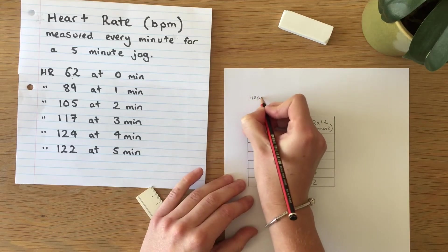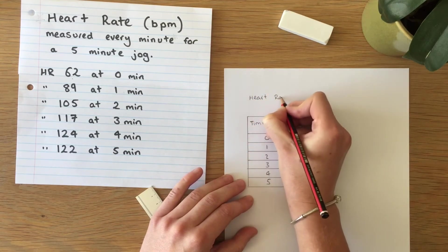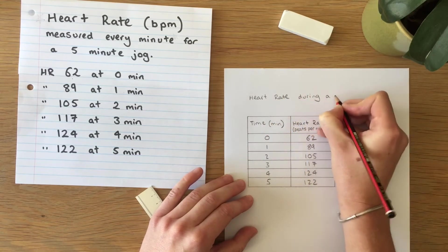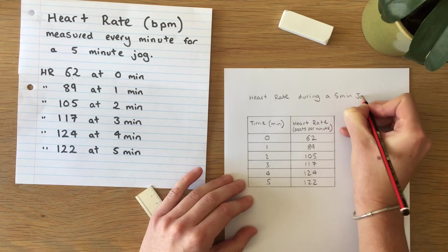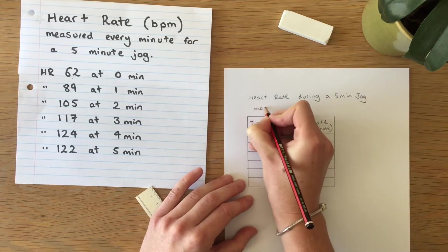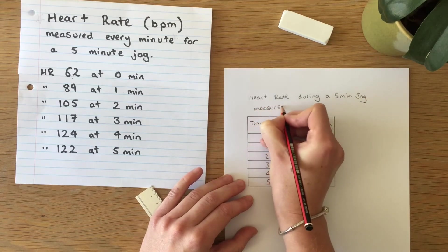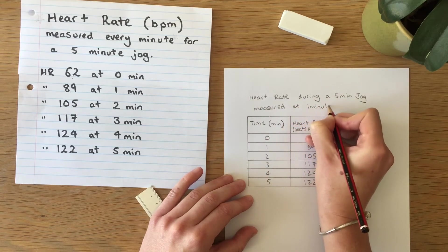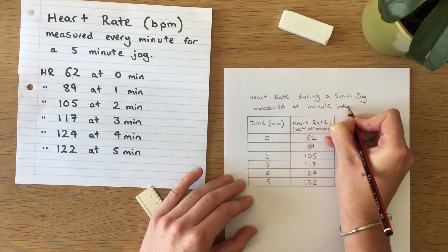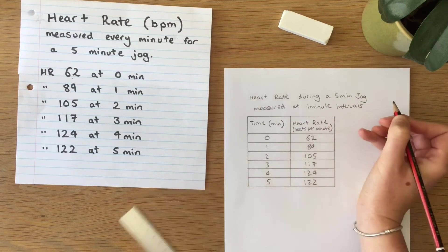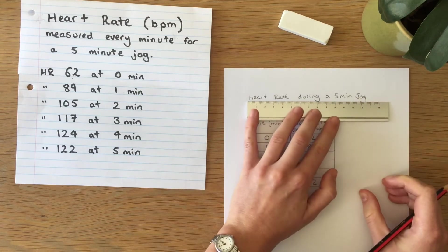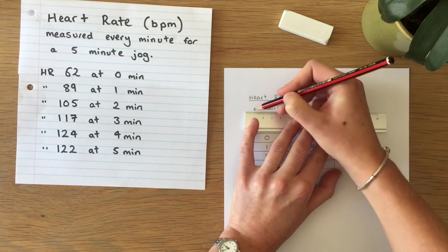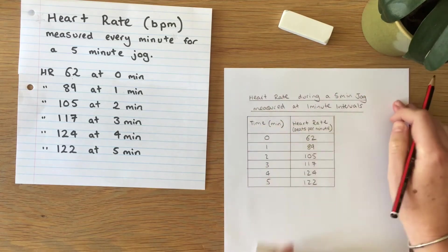So heart rate during a five minute jog measured at one minute intervals. And to make it really clear that that is our title, we're going to underline it and voila!